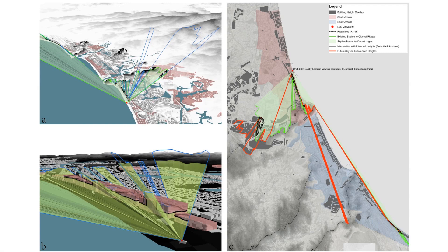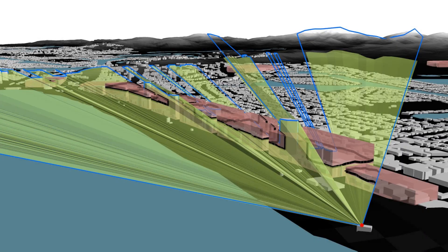This is an example of skyline threshold modeling from a designated lookout, displaying the engagement of view with the closest and distant reach lines and headlands which can be obscured by the building height overlay. By intersecting the skyline threshold to the closest reach with the building height overlay, the non-intrusive building height is identified, as shown by the black line.